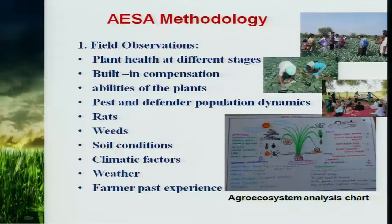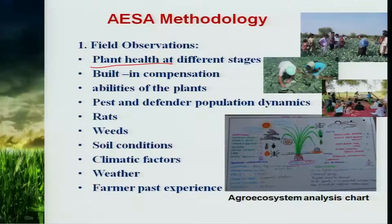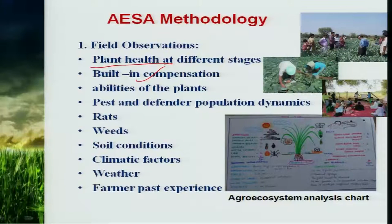How should AESA be carried out? In a simpler way, this involves continuous field observations. One has to observe the field continuously for plant health at different stages, and also whether the plant has an inbuilt capacity to compensate any adverse effects or any attack of insect pests or diseases in future — that also needs to be understood.